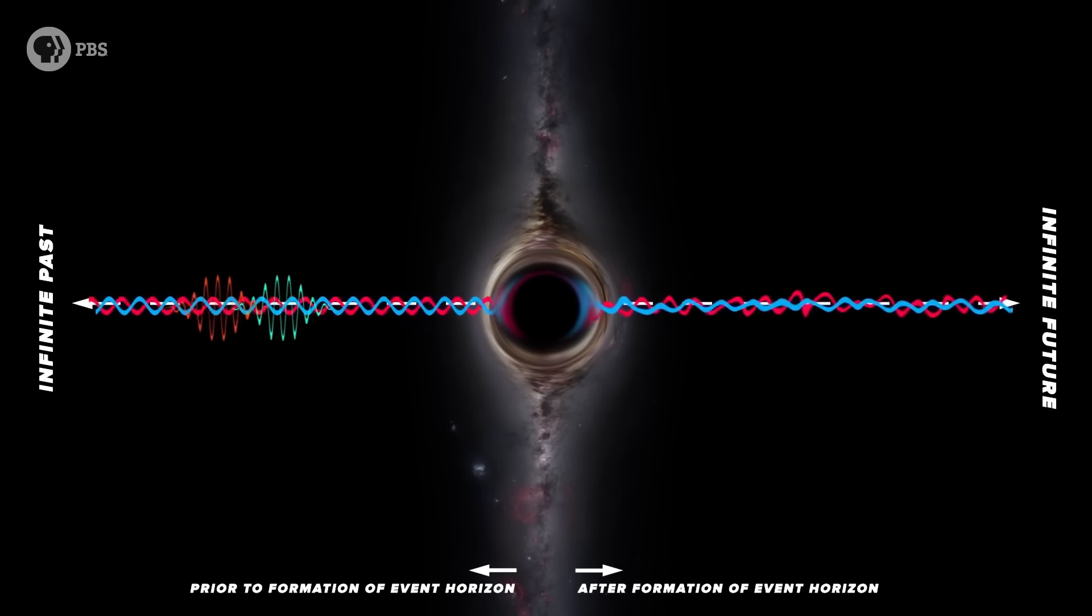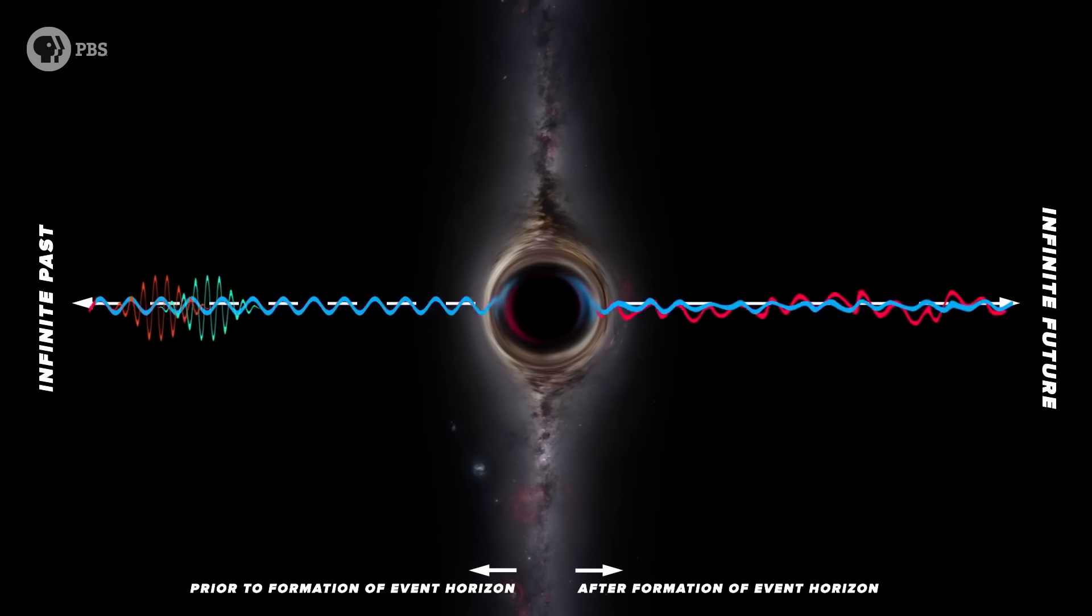He concluded that the black hole must generate particles – Hawking radiation. Which, by the way, was a key discovery on the path to the holographic principle, as we've discussed before and which I'll review again, but not today.